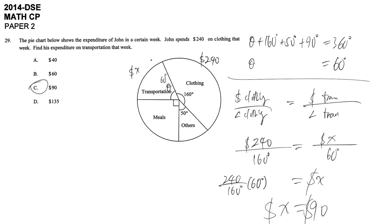So his expenditure is $90. Or you may think of it as each degree representing $1.50, so 60 degrees represents $1.50 times 60, which equals $90.